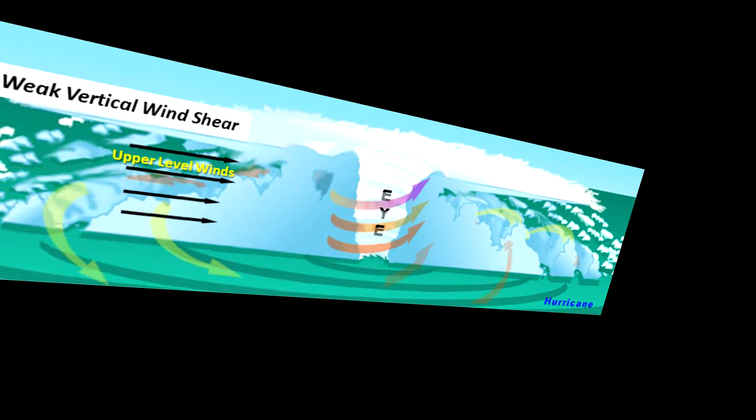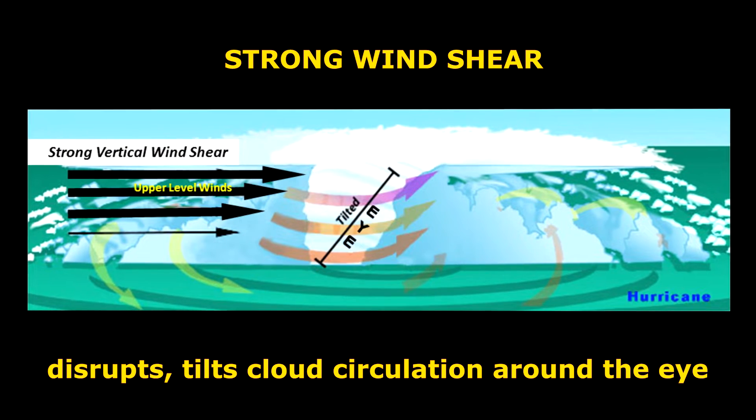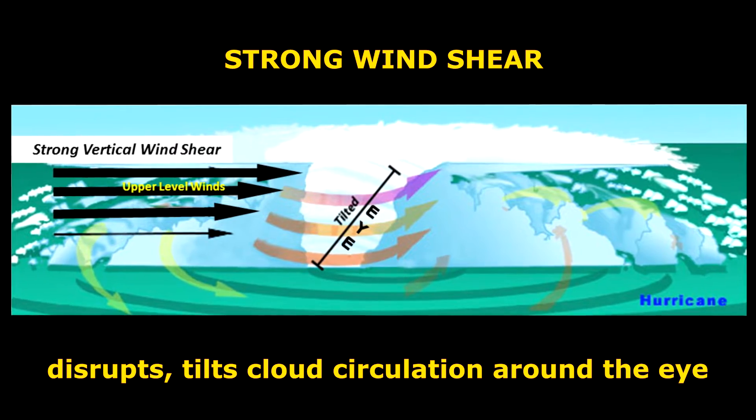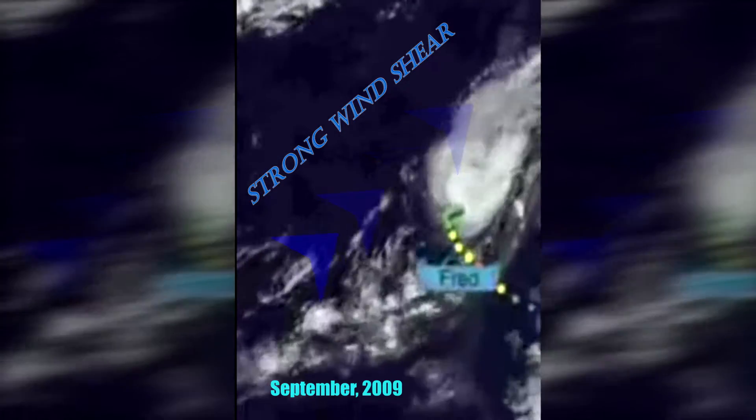Wind shear is also critical in the formation and intensification of hurricanes, which prefer having very weak wind shear in the atmosphere. That happens when wind speeds don't increase very much going from the surface of the water up into the atmosphere. Hurricanes don't like strong wind shear — it disrupts the circulation in the center and can actually kill the cyclone if it's too strong.